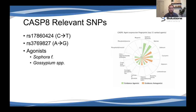The last of our caspases is caspase 8, with a couple of relevant SNPs and agonists including sophora and gossypium. Beyond the major ones listed, there's a whole host of others with research as well. Importantly, the level of research and which agents affect these genes is constantly being updated within Opus 23 — curators regularly check the most recent research in PubMed, and if new agents emerge, they're added to the agent fingerprint pattern so you're always working with the most up-to-date research.